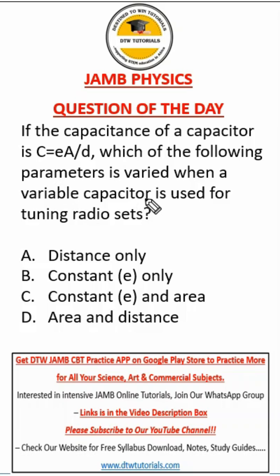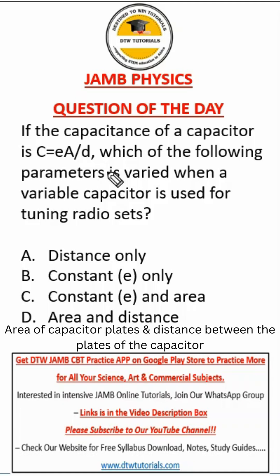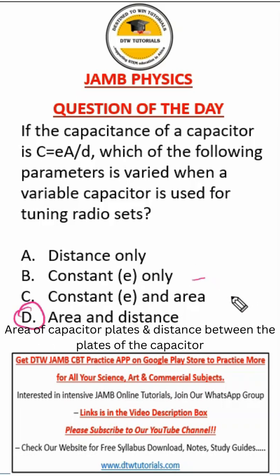So what will be variable — which parameters will be variable — will be the area and the distance. That is what will affect the capacitance of that capacitor. So our right answer is D: area and distance. Not distance only, not constant only.